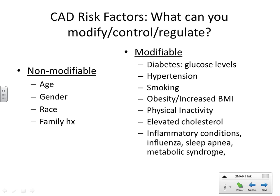Family history is non-modifiable — you can't pick your family. Modifiable risk factors include diabetes — you can't eliminate type 1 diabetes, but controlling glucose levels reduces your risk of coronary artery disease, because it's the spikes in glucose that increase risk. You can't get rid of the diabetes, but it's modifiable in the sense that you can control and regulate it.